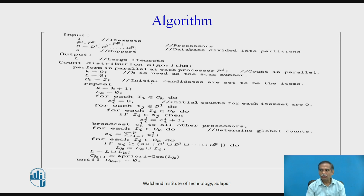The count distribution algorithm first performs counting in parallel for each processor pi. It scans the number of items present in each partition. The initial candidates are set to be the items, and initial counts for each item set are set to zero. We keep on adding the candidates to the item set and then determine a count for each partition.